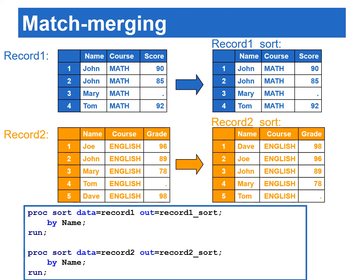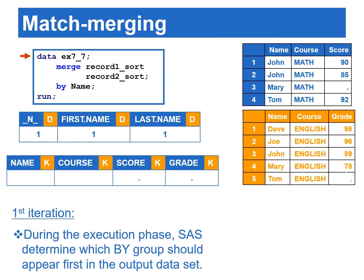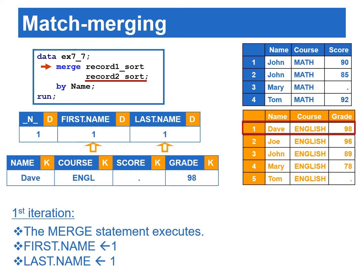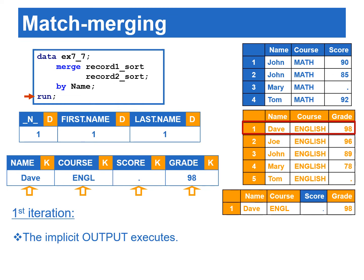Let's see an example of how match merging works. Suppose we are merging record one and record two by the name variable. Before performing the match merge, we need to make sure these two data sets are previously sorted by the name variable. To merge the sorted data sets, we use the merge statement along with the by statement. During the data step execution phase, SAS determines which by group should appear first in the output data set. The first by group is when name equals Dave — there is only one observation for this by group. When the merge statement executes, both first.name and last.name are set to one in the PDV. The first record where name equals Dave from record two sort is copied to the PDV. SAS reaches the end of the data step, and the implicit output copies the contents from the PDV to the output data.